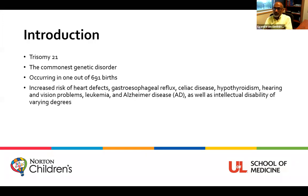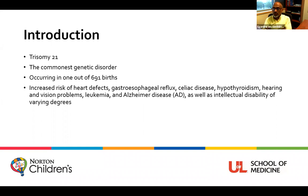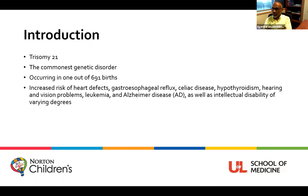Starting with some basic information. As you all know, Down syndrome is otherwise called Trisomy 21, the most common genetic disorder in the medical field, occurring in one out of every 691 births. Down syndrome increases the risk of heart defects, gastroesophageal reflux, celiac disease, hypothyroidism, hearing and vision problems, leukemia, Alzheimer's disease, as well as intellectual disability of varying degree in each child.